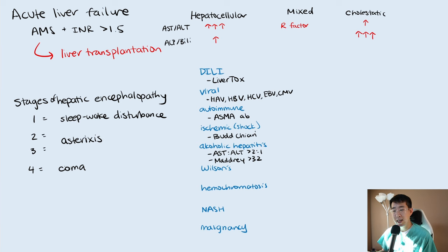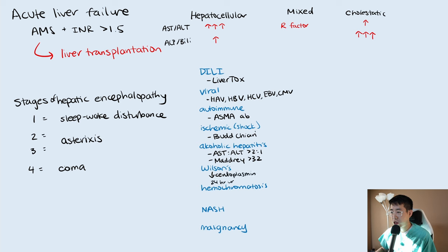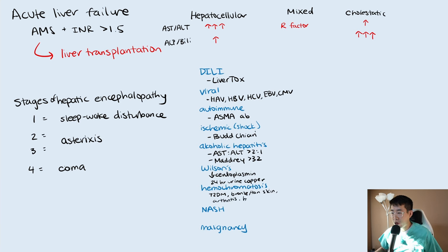Wilson's disease — typically think of this in a young female patient with neurologic symptoms and Kaiser-Fleischer rings in their eyes. The way to check for this is to find a low ceruloplasmin in the serum, and then also check the 24-hour urine copper. Hemochromatosis comes up all the time on boards — the patient usually has new-onset diabetes, bronze or tan skin, arthritis, and hypogonadism.